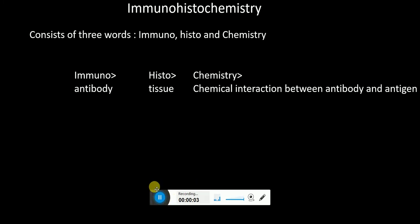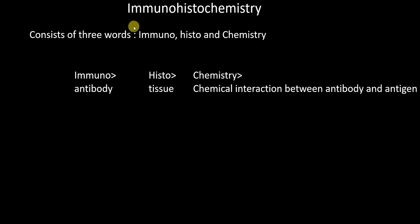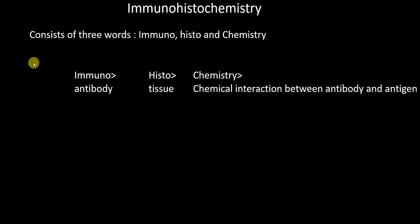In this lecture, I'm going to talk about immunohistochemistry — its principle and techniques. The word immunohistochemistry consists of three words: immuno, histo, and chemistry. Immuno means antibody, related to the immune system, and in this method we use an antibody to detect antigen. Histo refers to tissue, because this method is performed on tissue samples. Chemistry refers to the chemical interaction between antibody and antigen, which is detected.